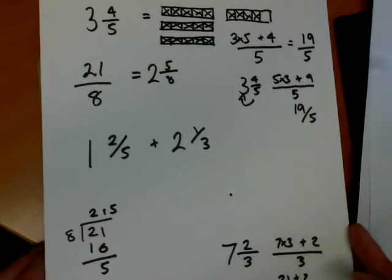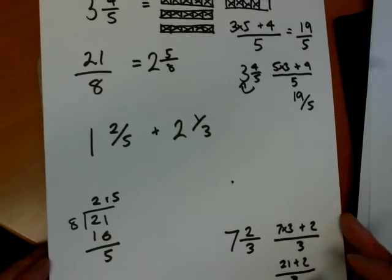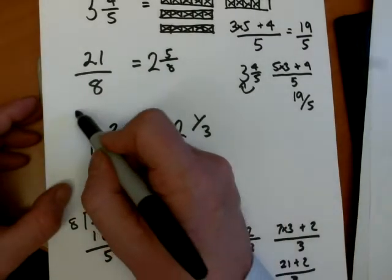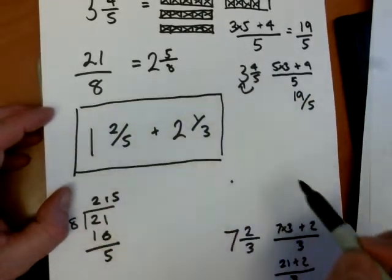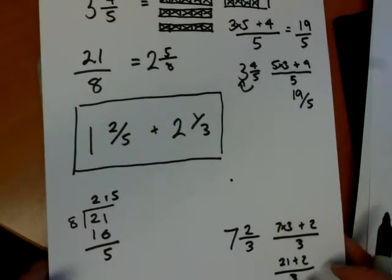Now we need to write fractions as improper fractions to help us do calculations with them. So we're going to concentrate now on how we would add 1 and 2 fifths plus 2 and 1 third.